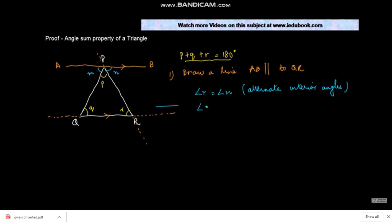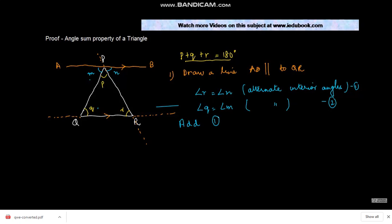Similarly, angle Q is equal to angle M, by the same reason — alternate interior angles are equal. Call this equation 2. Adding equations 1 and 2, we get angle R plus angle Q is equal to angle N plus angle M.